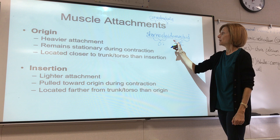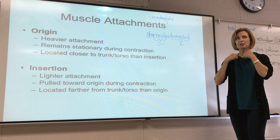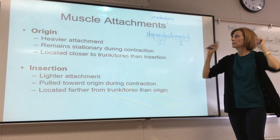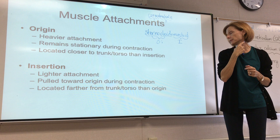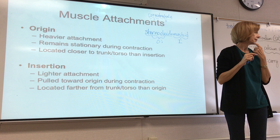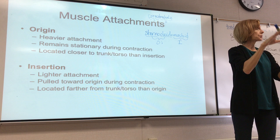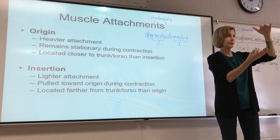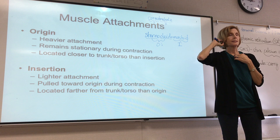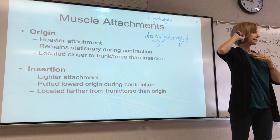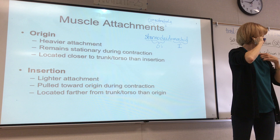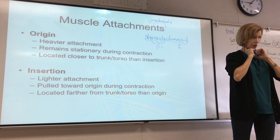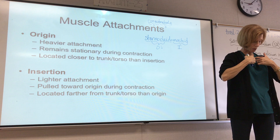Going back to the sternocleidomastoid — the sternum and clavicle are the origins because they're more on the trunk area, while the head is more easily movable, making the mastoid process the insertion. This muscle turns the head toward the opposite side. When a muscle shortens or contracts, the two ends come closer together, so you can visualize the insertion moving toward the origin. The sternocleidomastoid on the right side turns the head to the left. If both sides contract, it pulls the head down into flexion.